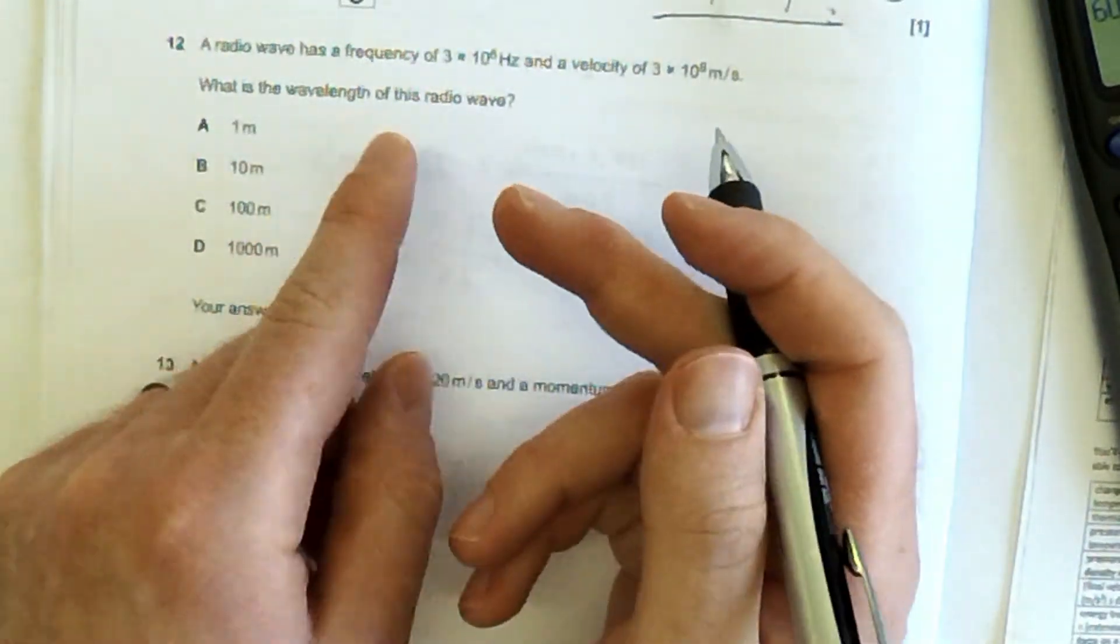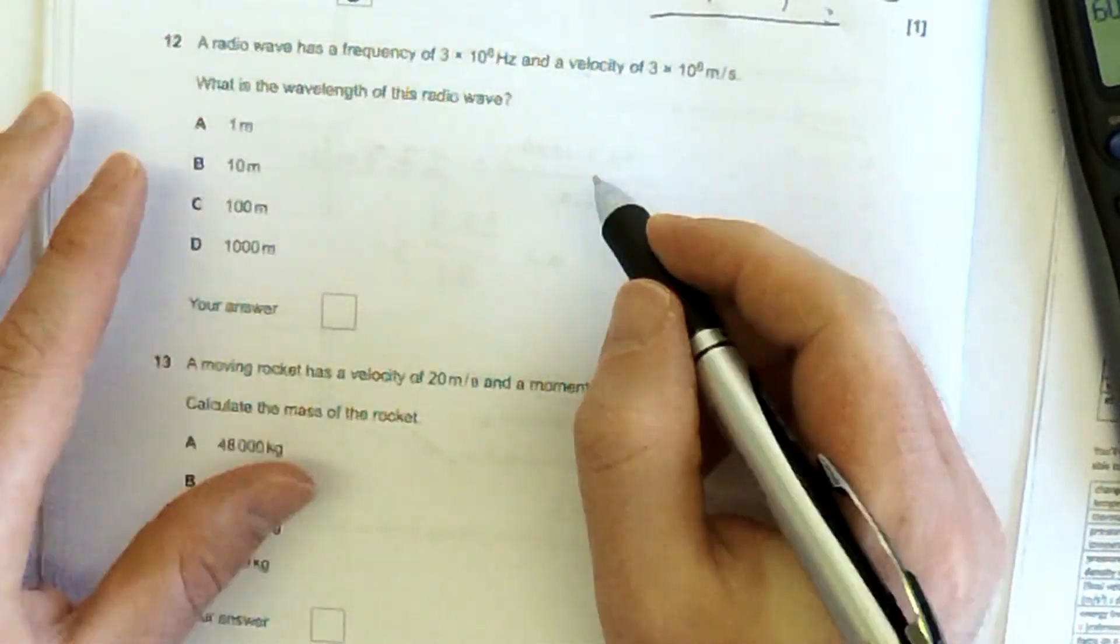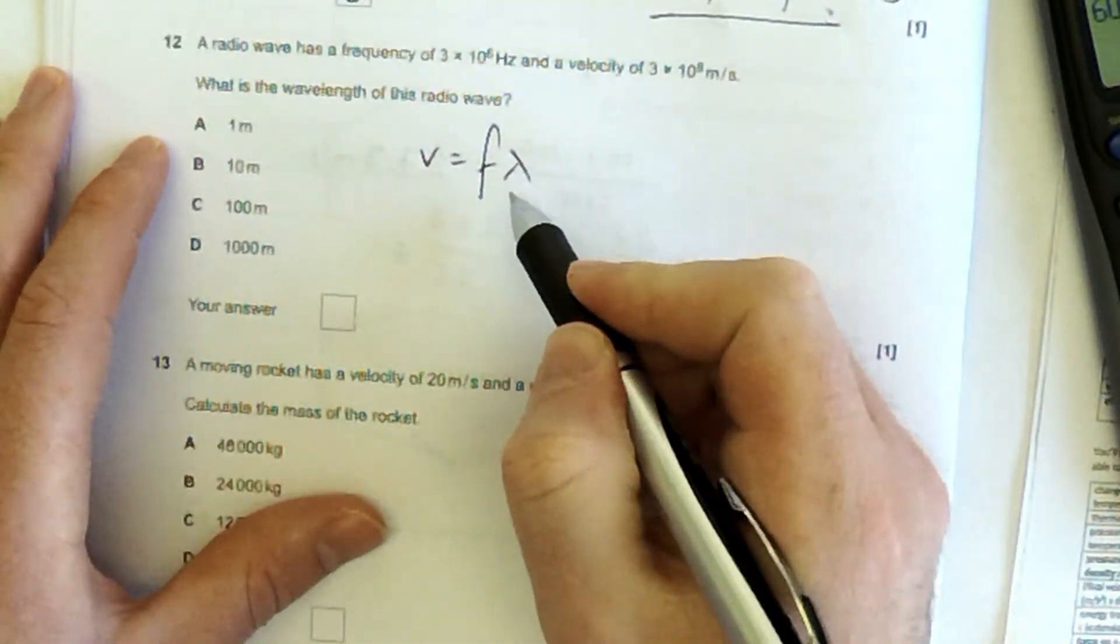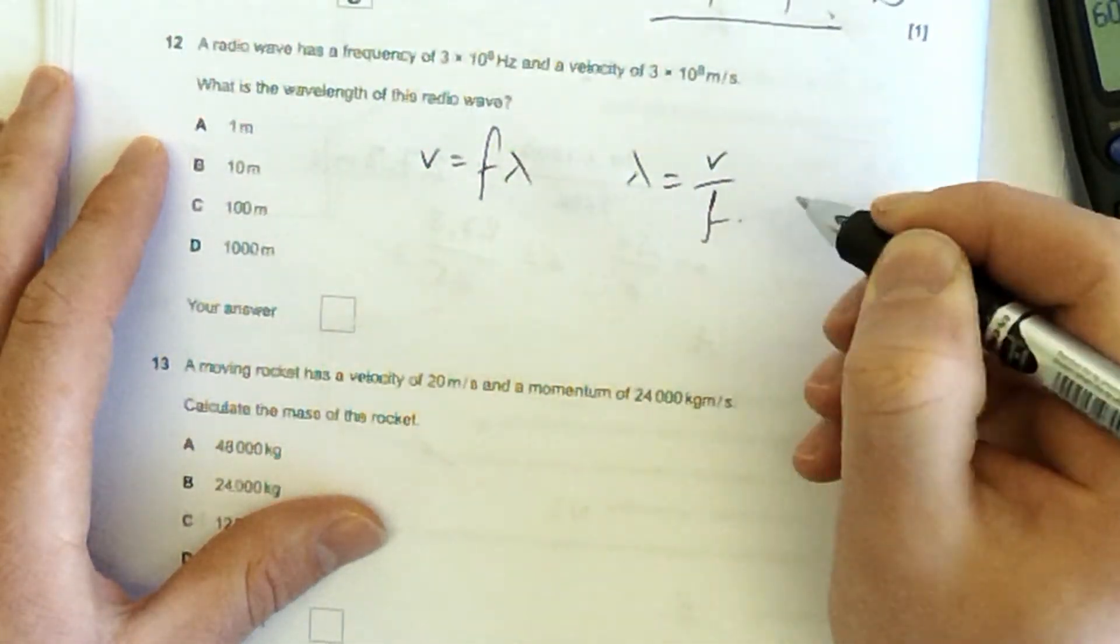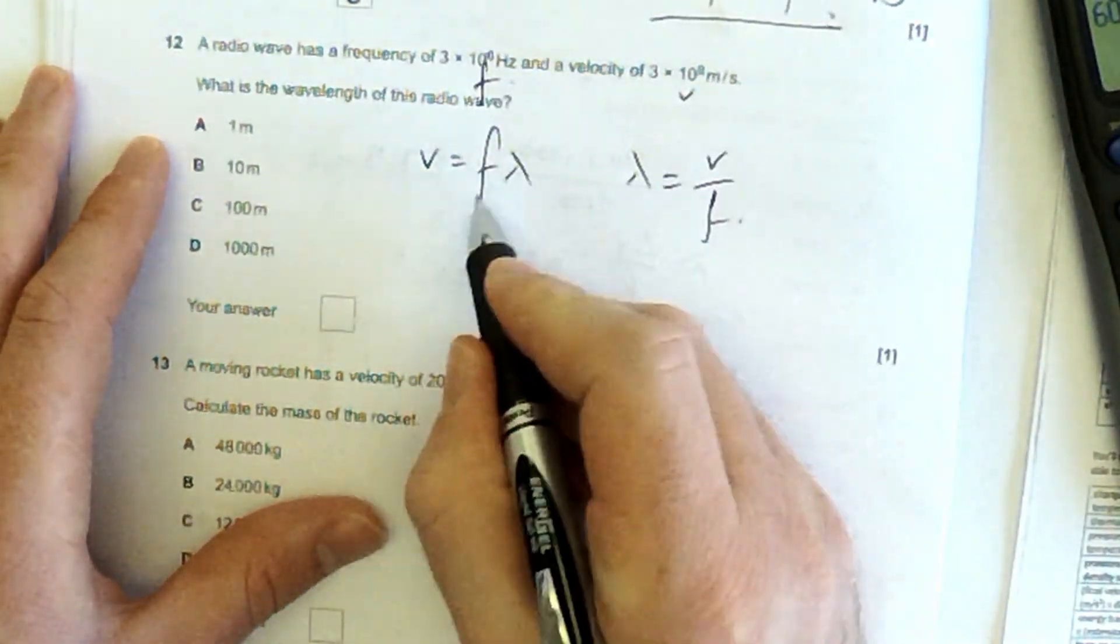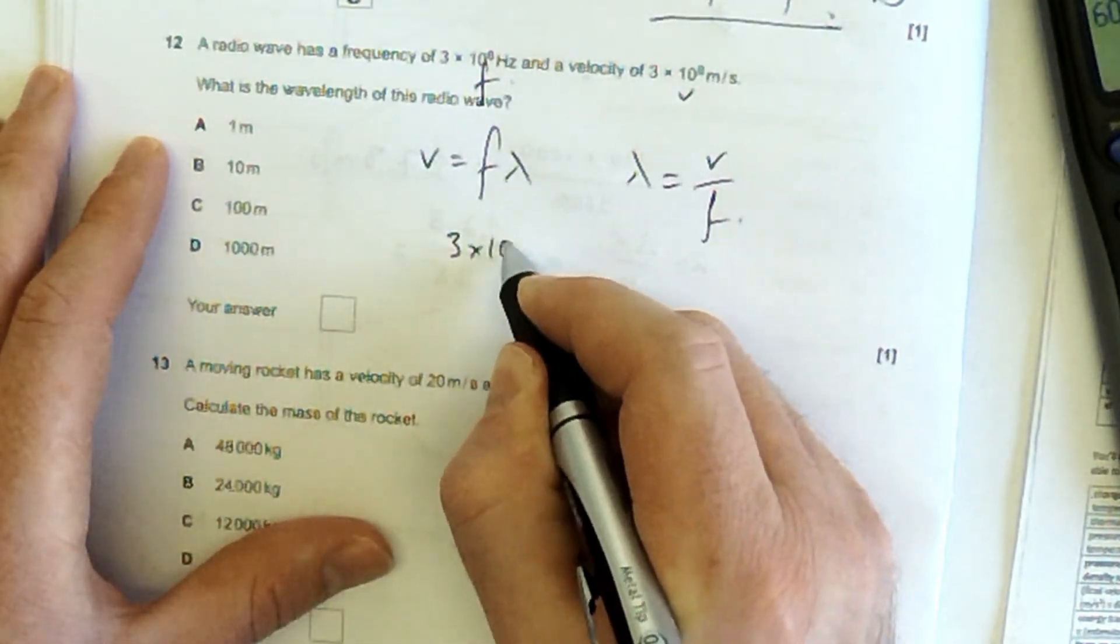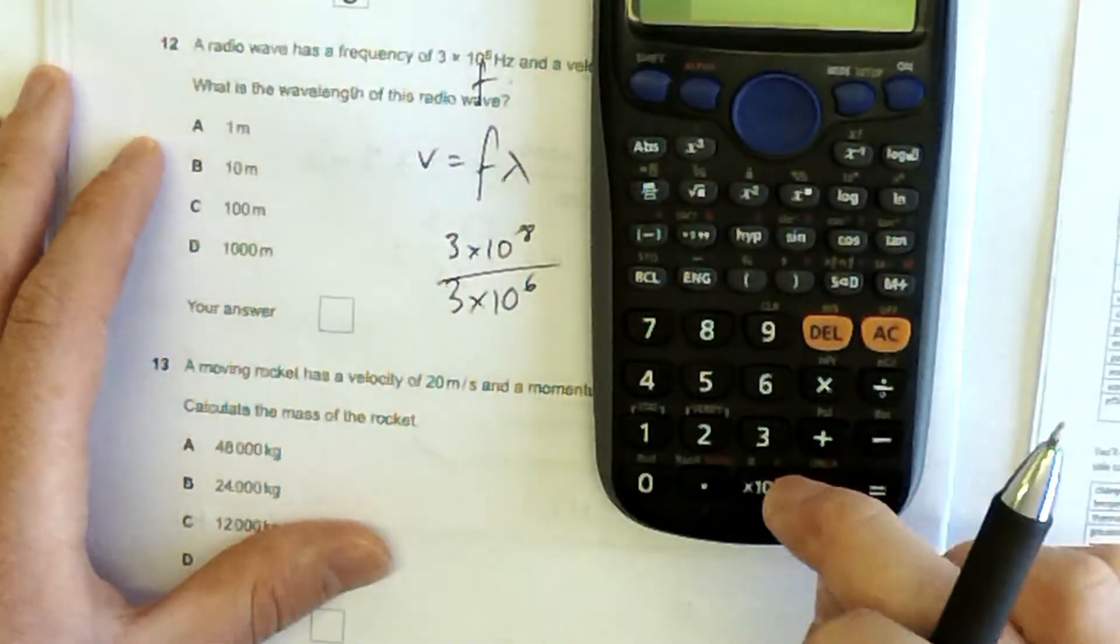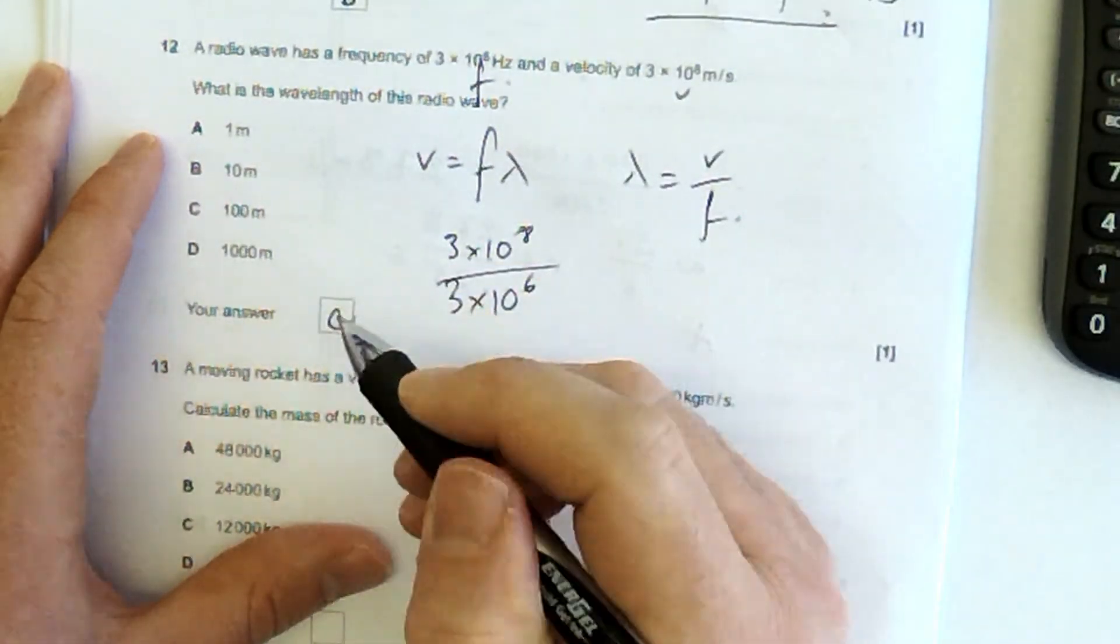The radio wave has a frequency of 3 times 10 to the 6 hertz and a velocity of 3 times 10 to the 8. What's the wavelength for the radio wave? So do you remember your equations? Wave speed is frequency times wavelength. You've got to rearrange that for wavelength, so that becomes v over f. So v is this one and f is this one. They're in the correct units. Hertz is the SI unit of frequency, so that's okay. 3 times 10 to the 8 over 3 times 10 to the 6. 100. So the answer is C.